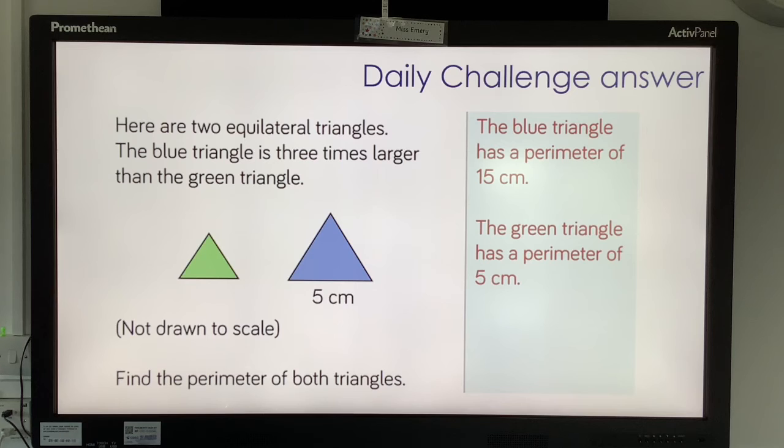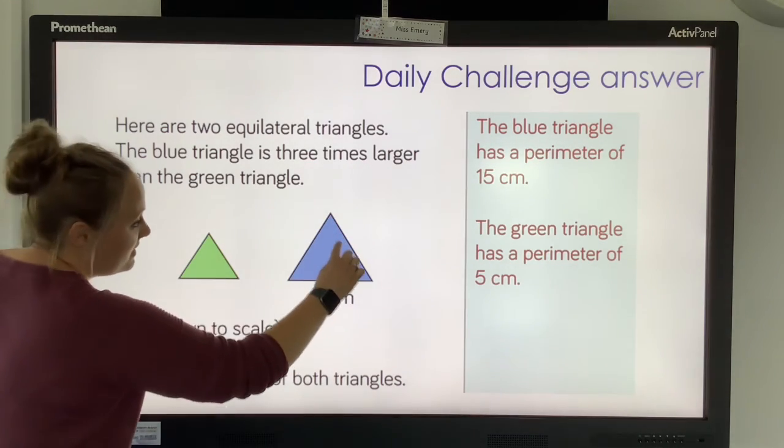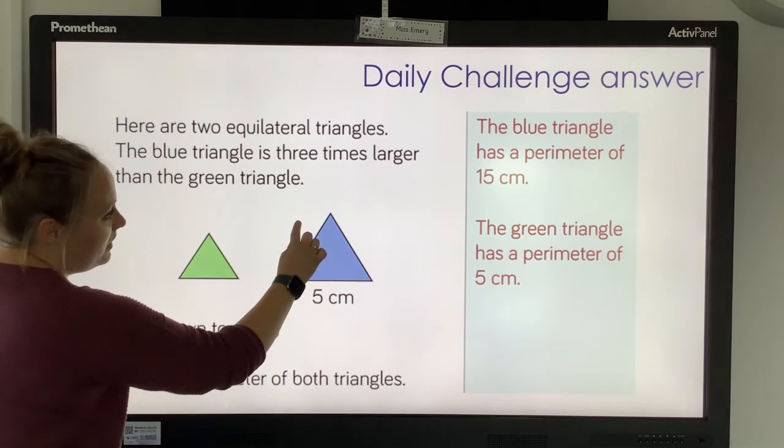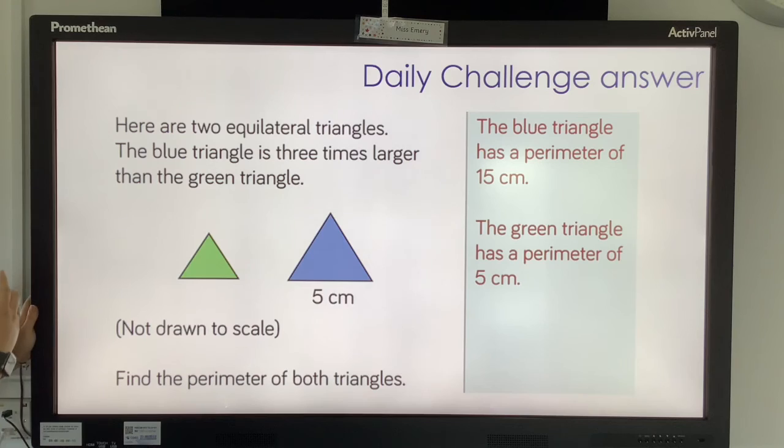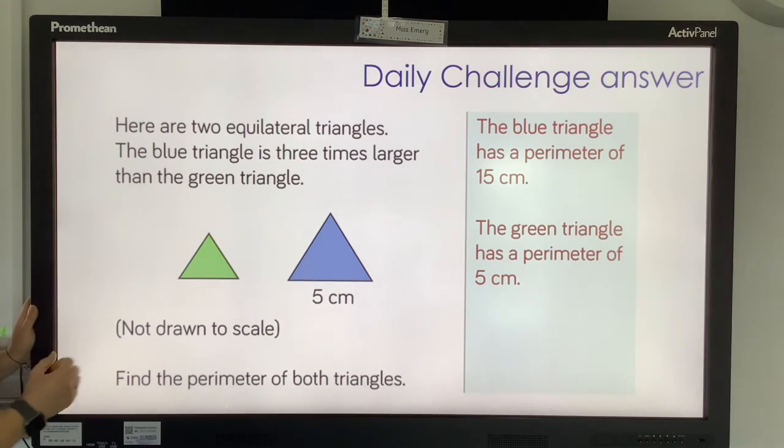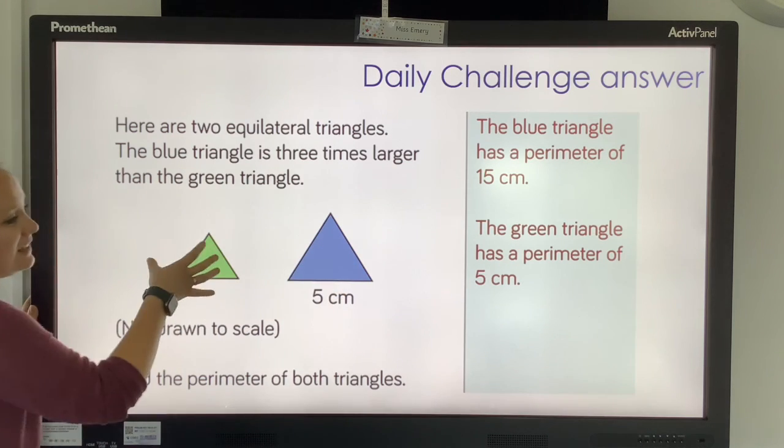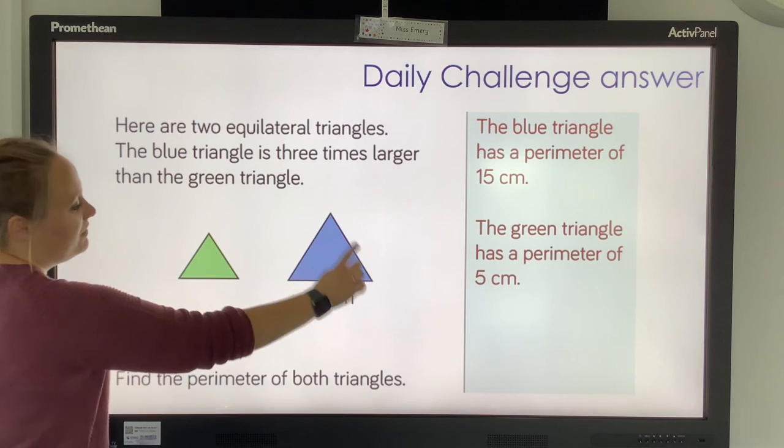And lastly, here are two equilateral triangles. The blue triangle is 3 times larger than the green triangle. Well that was all the information you needed. You know that it's an equilateral triangle, so all sides are the same length. And you know that this side is 5, which means this side is 5, and this side is 5. So all together, the perimeter is 15. Now you know this one is 3 times larger, this one must be 5. If the perimeter is 3 times larger and it's 15, then the perimeter is 5. The perimeter of this shape is 5, and the perimeter of this shape is 15.